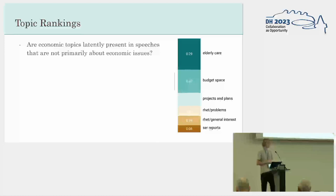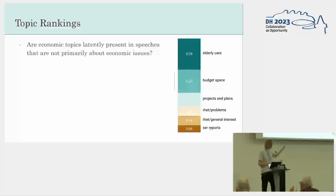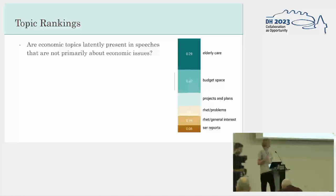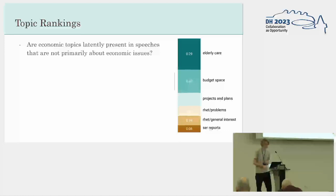you can see that there are all kinds of economic topics present in that speech. There's a topic of budget space — probably some austerity-related ideas going on there — topics about projects and plans, and rhetorical topics that are labelled as being about problems, the general interest, and SER reports. That's a kind of advisory body in the Dutch political system.